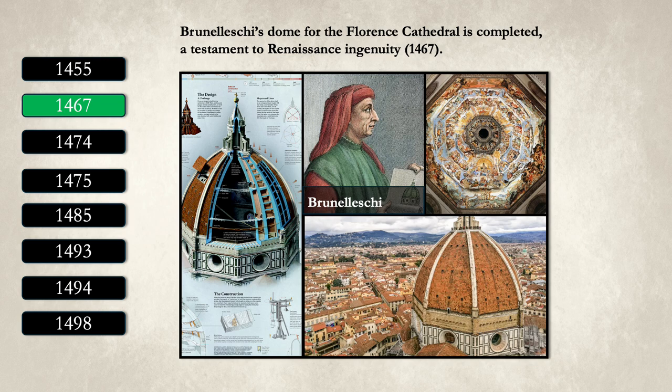Completed in 1467, Brunelleschi's dome for the Florence Cathedral stands as a testament to Renaissance ingenuity. This architectural marvel, with its innovative use of a double-shell and herringbone brickwork, solved the long-standing challenge of spanning the cathedral's vast opening.